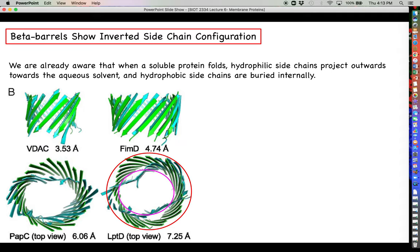Just as we did for the hydrophobic alpha helix, we want to talk about this with regard to the amino acid makeup of this particular structure. We're already aware that if you have a fully soluble protein, meaning a protein that's just floating around in a fluid and not part of the membrane, they like to fold such that their hydrophilic side chains project outwards towards the aqueous solvent, and any hydrophobic side chains are buried internally so they exclude water.